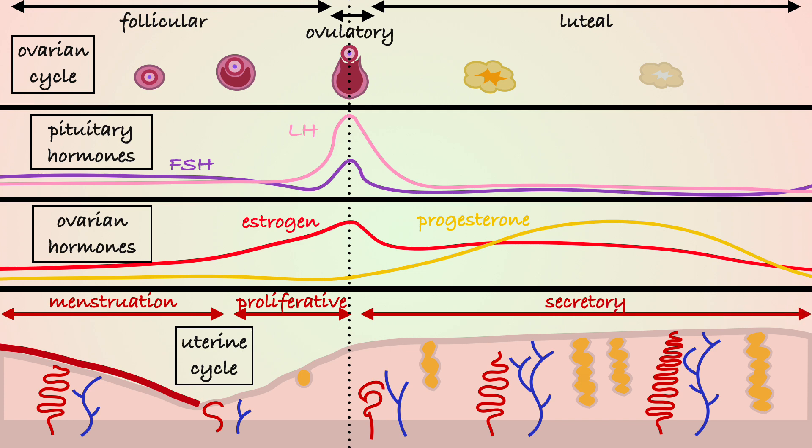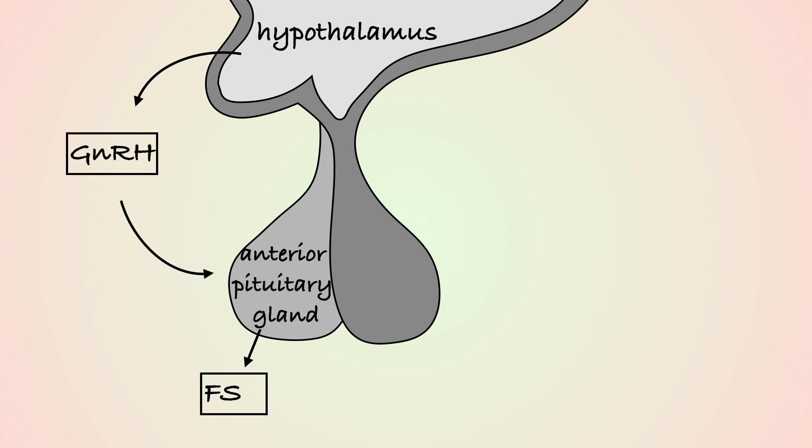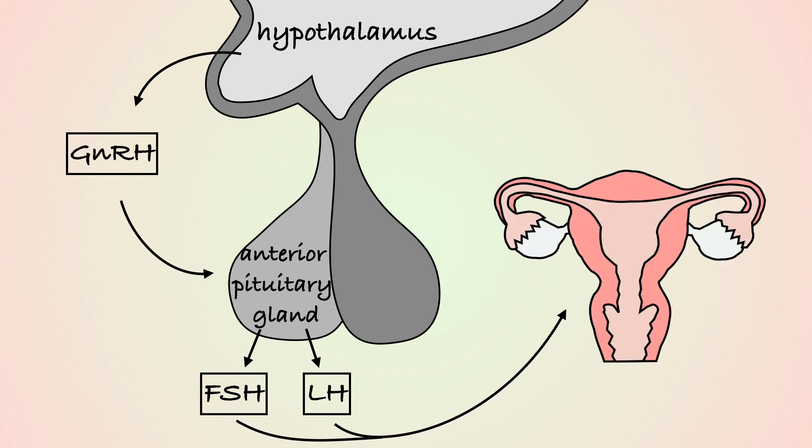The uterine cycle consists of three phases as well: menstrual, proliferative, and secretory. Gonadotropin-releasing hormone, produced by the hypothalamus, causes the anterior pituitary gland to secrete follicle-stimulating hormone and luteinizing hormone, which together control the menstrual cycle.